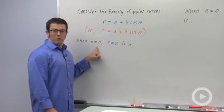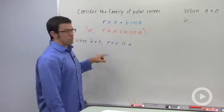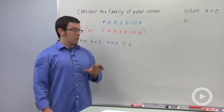Now when b equals 0, all you get is r equals a, and this is going to be the graph of a circle.